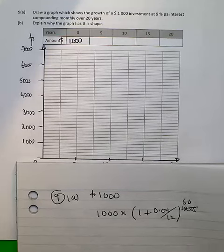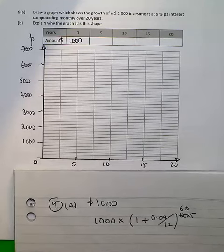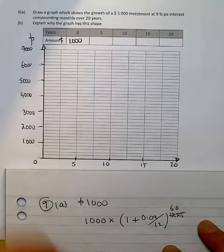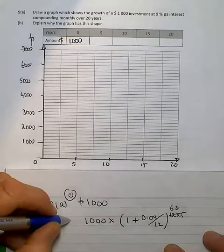In question 9, we're going to look to see how $1,000 grows under compound interest over a period of time. Now, obviously for 0 years, it's $1,000.